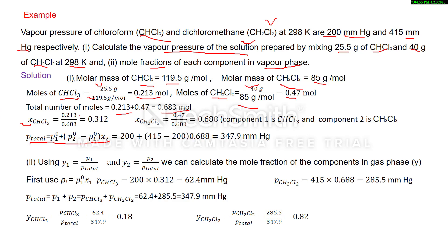Mole fraction of CHCl3 (component 1): 0.213 / 0.683 = 0.312. Mole fraction of CH2Cl2 (component 2): 0.47 / 0.683 = 0.688. Now putting values into the formula — P01 = 200, P02 = 415, X2 = 0.688 — we get P_total = 200 + (415 − 200)·0.688 = 347.9 mmHg.